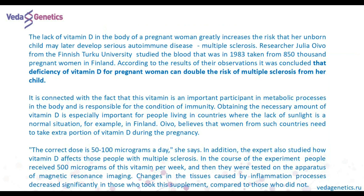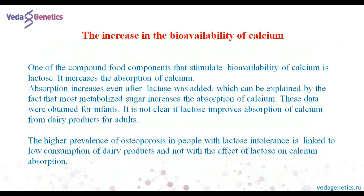The lack of vitamin D in the body of a pregnant woman greatly increases the risk that her unborn child may later develop serious autoimmune disease — multiple sclerosis. That is why pregnant women need to take an extra portion of vitamin D during pregnancy and lactation. One of the compound food components that stimulate bioavailability of calcium is lactose — it increases the absorption of calcium.